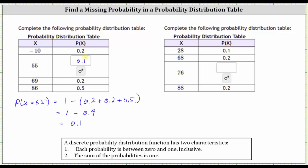And now for the second table, again, we're missing one of the four probabilities. We're missing the probability x is equal to 76.